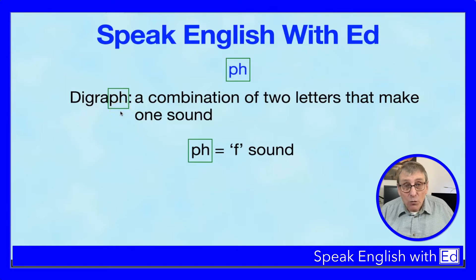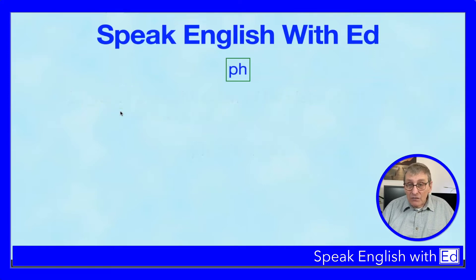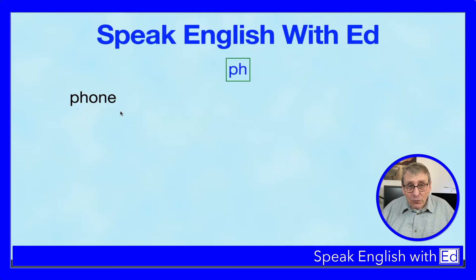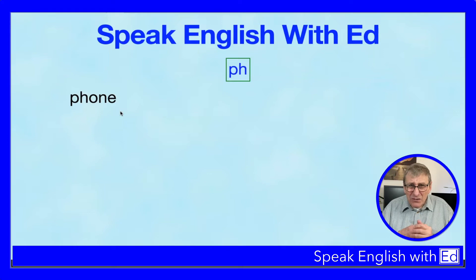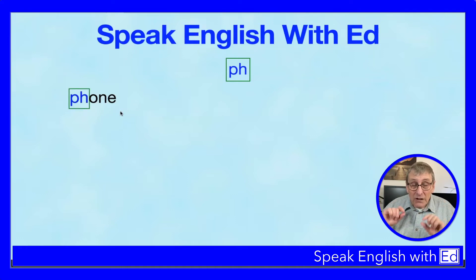Let's look at some words pronounced with F that have PH in them. First, we've got 'phone' — something you'll use every day. You'll wake up in the morning and say, 'Where's my phone?' or 'I need to check my phone.' Everybody does. So 'phone' — it's got a digraph. The PH at the beginning is together, so it's pronounced with an F sound: phone.